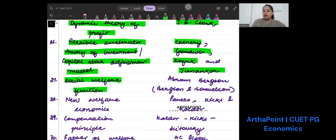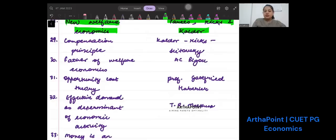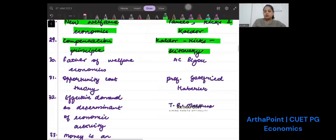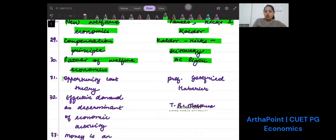Flexible accelerator theory of investment, also called capital stock adjustment model, was given by Chenery, Goodwin, Koyck, and Jorgenson. Social welfare function was given by Bergson and Samuelson. New welfare economics is given by Pareto, Hicks, and Kaldor. Compensation principle is given by Kaldor, Hicks, and Scitovsky. Father of welfare economics is A.C. Pigou.